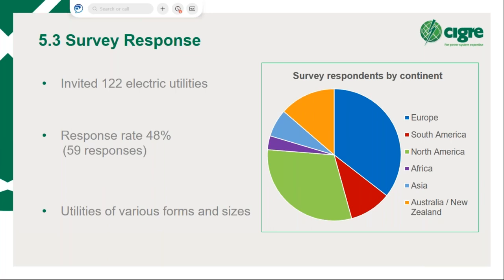Looking at the distribution of survey respondents, the majority were from Europe and North America, while Africa and Asia showed the least responses. This does not indicate a lack of interest in asset management from Africa and Asia — it indicates that most utilities invited by working group members were from Europe and North America, and Europe has the highest participation in CIGRE.